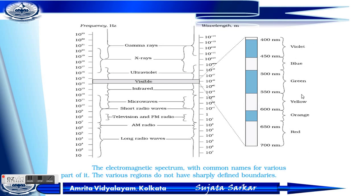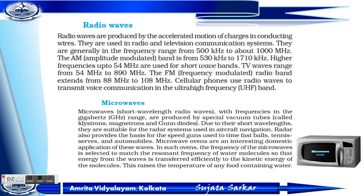Now we have to study radio waves. Radio waves are produced by the accelerated motion of charges. They are used in radio and television communication systems and are generally in the frequency range of 500 kilohertz up to about 1000 megahertz. The AM band ranges from 530 kilohertz to 1710 kilohertz.